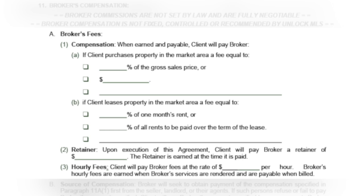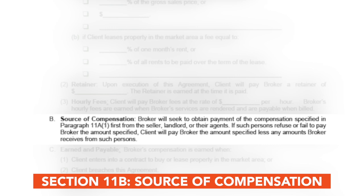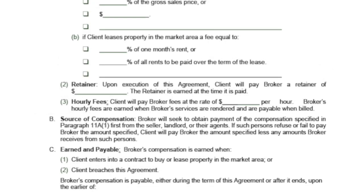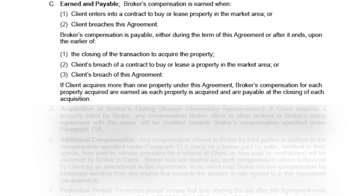Compensation can be a percentage of a sale or lease, a retainer, an hourly rate, or laid out in another form. Fill in this section based on your agreement with your client. The second part of this section focuses on how that payment will happen. Broker compensation can be sought from the seller, landlord, or their broker, and the client will pay the difference. The compensation is earned when the contract is signed and payable at closing. The third part focuses on how compensation is earned and payable — it is earned when the client enters into a contract to buy or lease a property in the market area, or breaches the agreement. The compensation is payable at the time of closing, when the client breaches a contract to buy or lease a property in the market area, or when the client breaches this agreement.